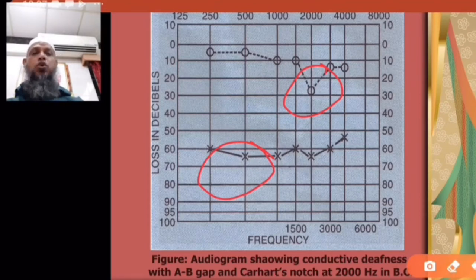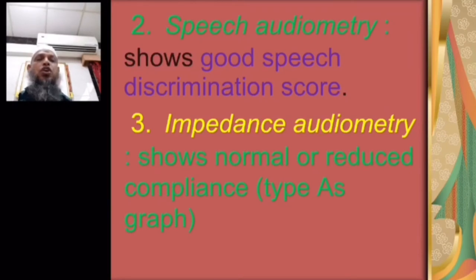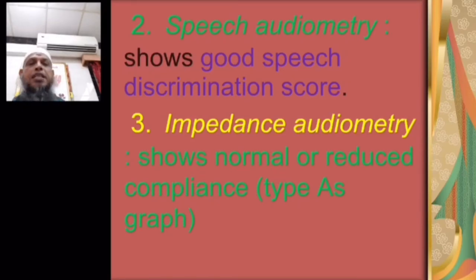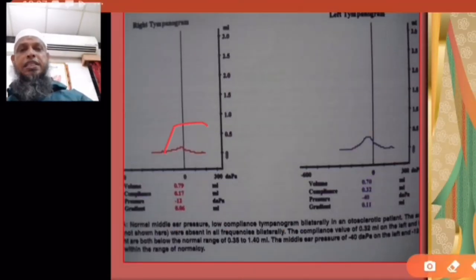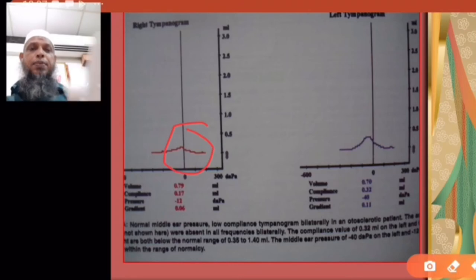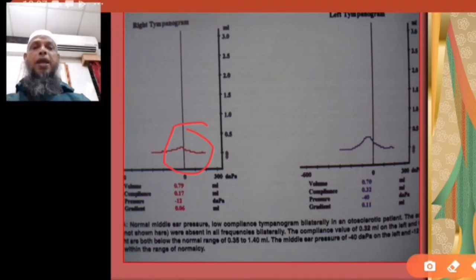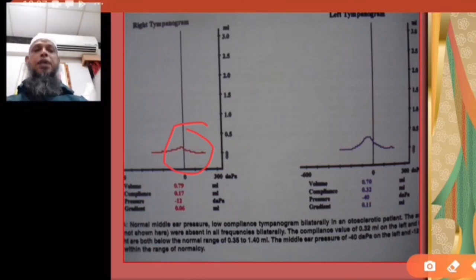Speech audiometry shows good speech discrimination score — that is normal. Impedance audiometry shows normal or reduced compliance — the type AS curve, where compliance is less than 0.3 mL on tympanometry.